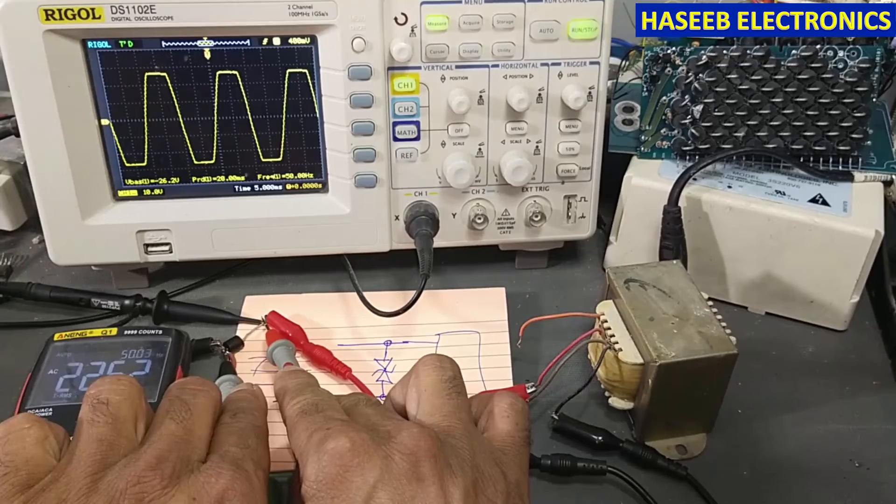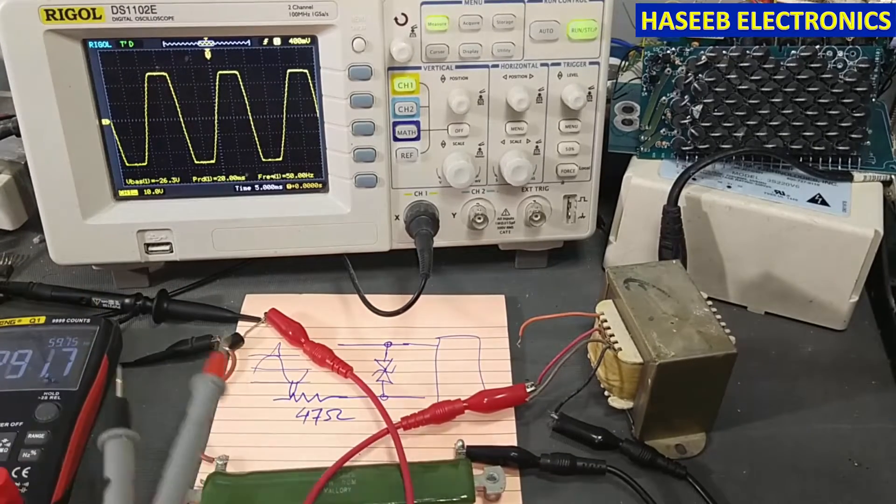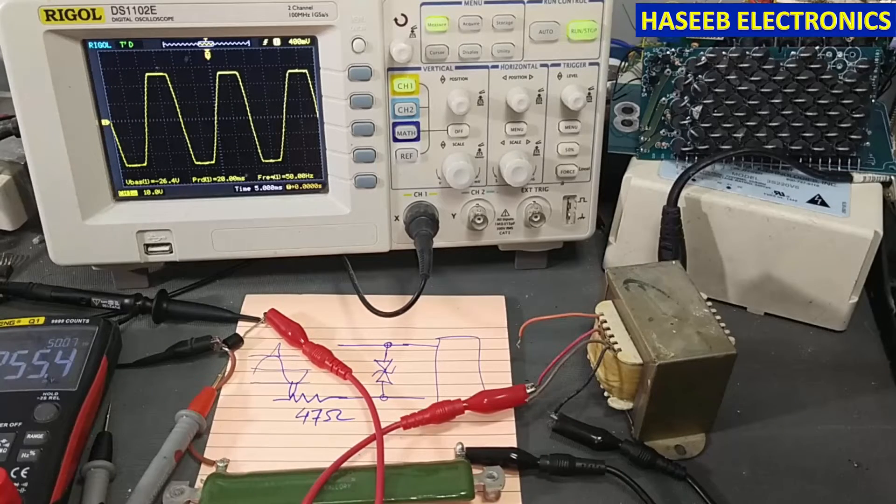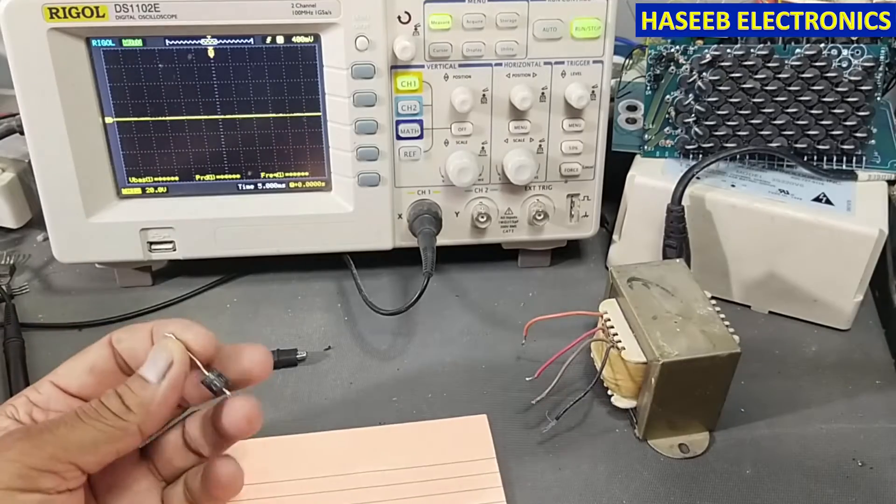If you think this video is good, hit the like button. Let's start. In this session, we will do a practical test for this KP 5 KP 22 CA bidirectional TVS transient voltage suppressor.